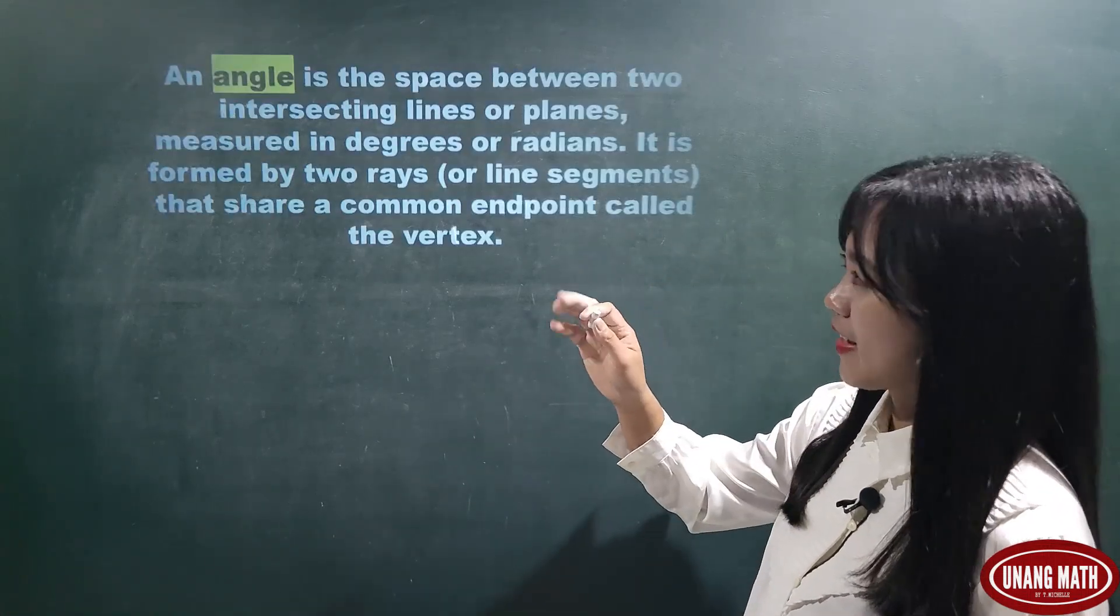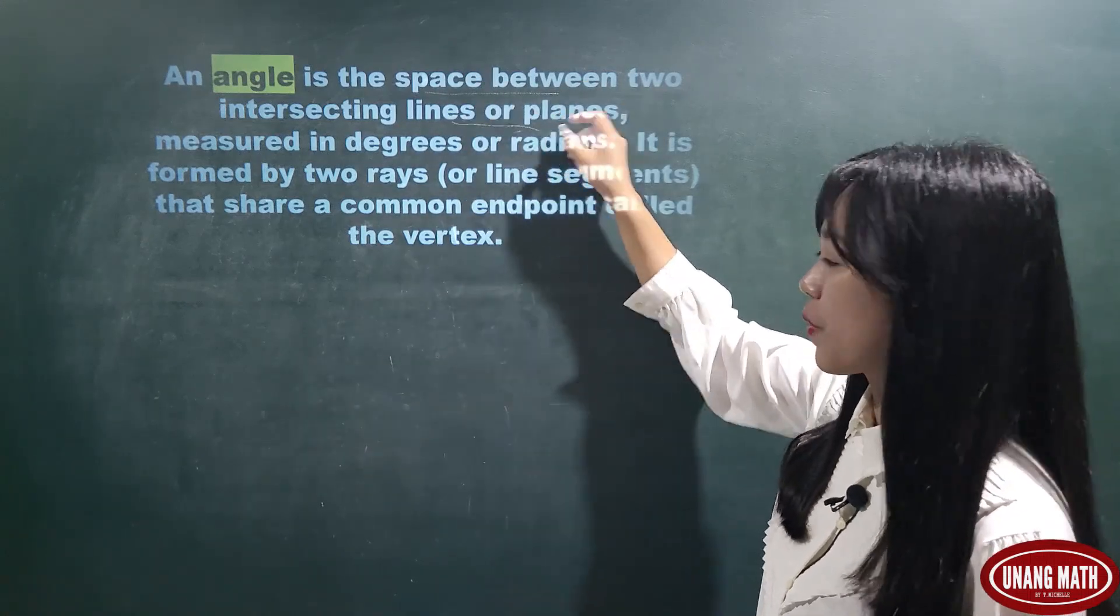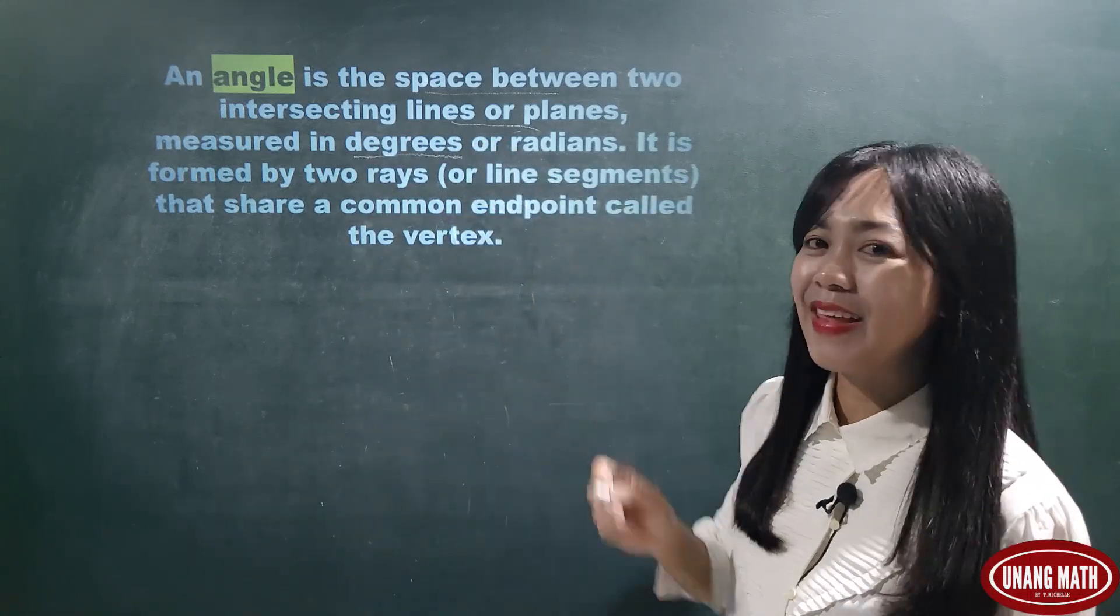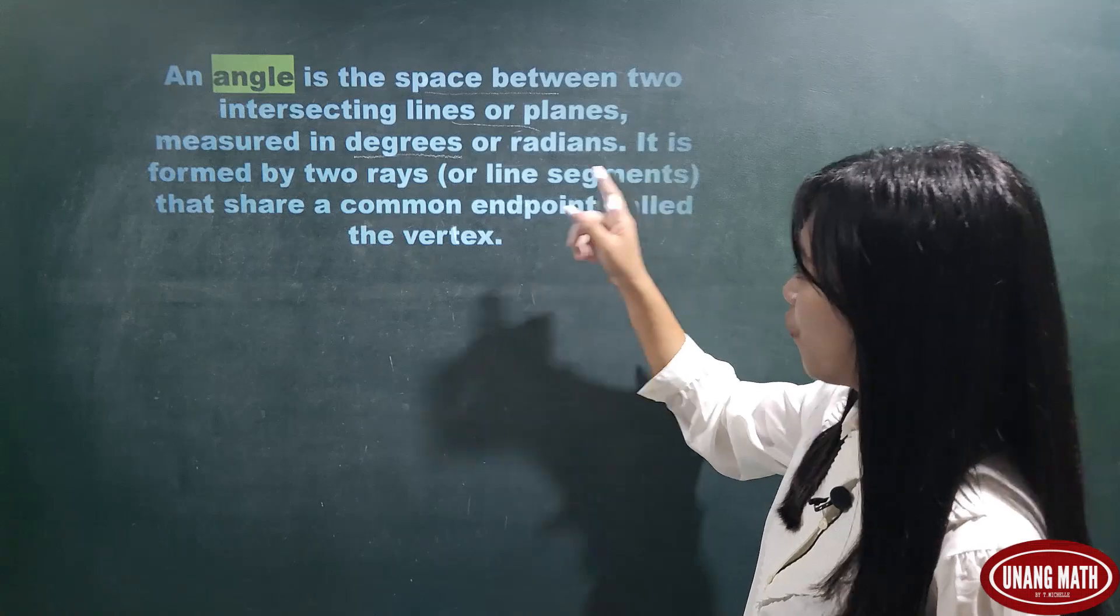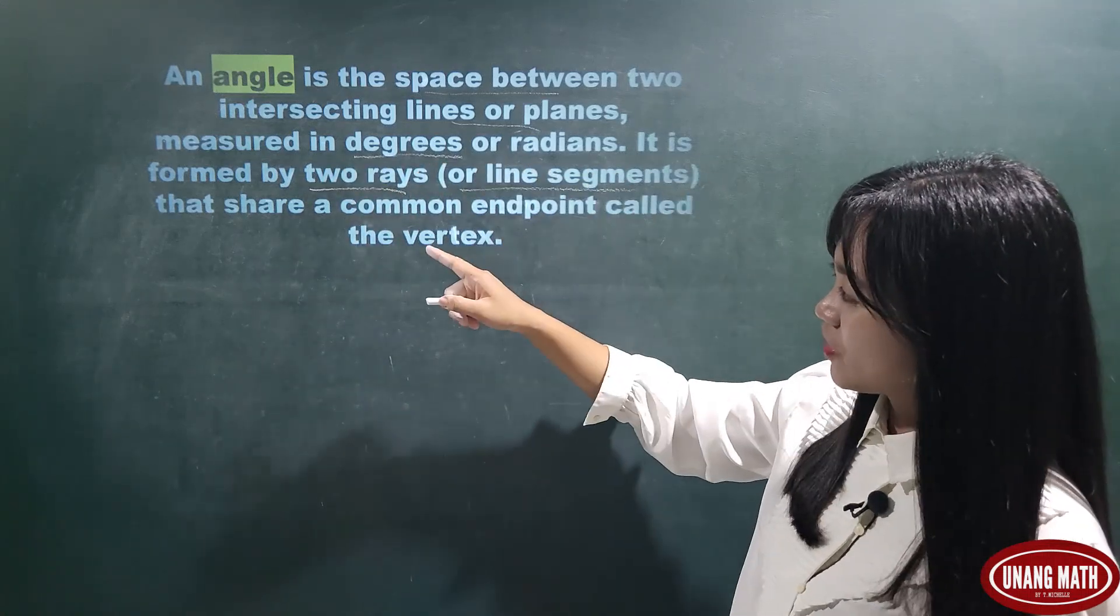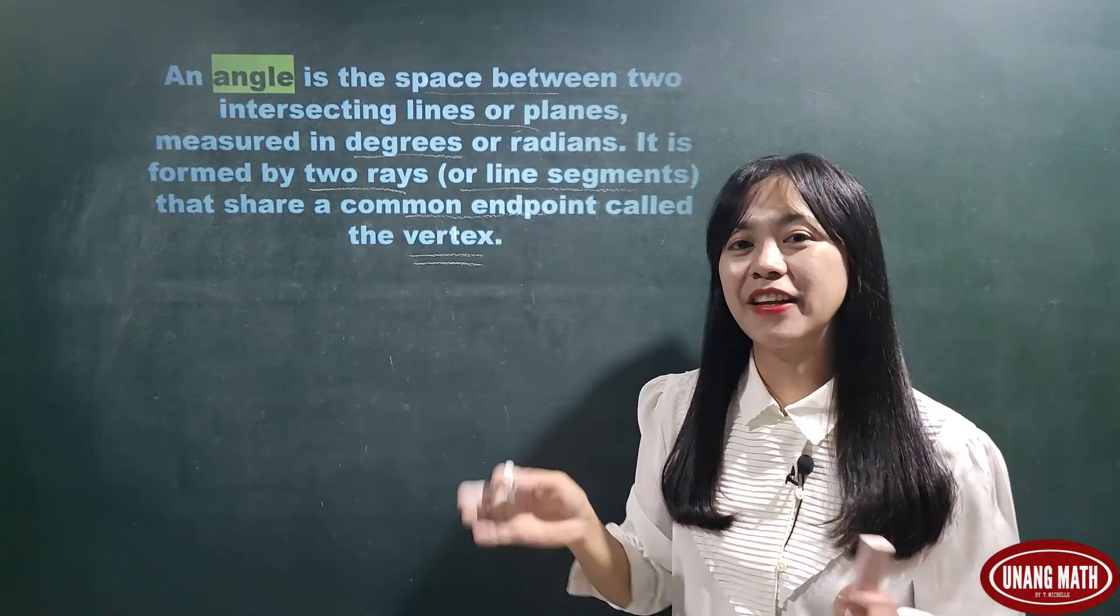When we say angle, this is the space between two intersecting lines or planes. This is measured in degrees or radians. Angle is formed by two rays or line segments that share a common endpoint. That is what we call the vertex.